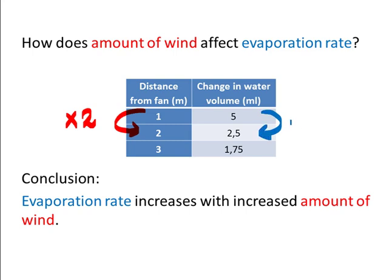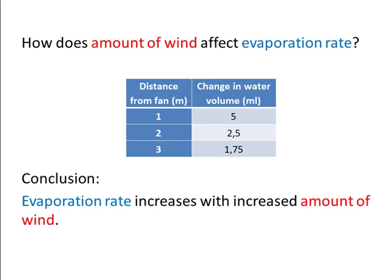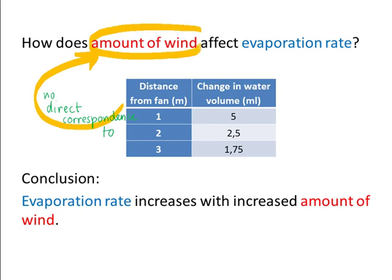So even if we would have inverse proportion in the data, we could then conclude change in water volume is inversely proportional to distance from fan. But that's not so much use because that's not very general. We're not really interested in how the change of water volume compares to the distance from fan. We want to know the more general issue of how evaporation rate links to amount of wind. So this illustrates one kind of limitation where the indicator of a variable doesn't have a direct correspondence. And so you can't from the data patterns you see conclude what the mathematical relationship is between the two general variables that you're really trying to investigate.